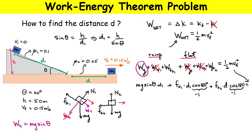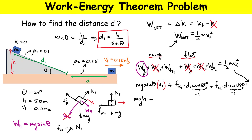Now we substitute D1 = h / sin θ into the expression. Notice that sin θ appears in both mg·sin θ and D1 = h / sin θ — those cancel, leaving simply mgh. For the friction terms we need the normal forces: on the ramp, F_k1 = μ1 × N1, and we need to find N1.